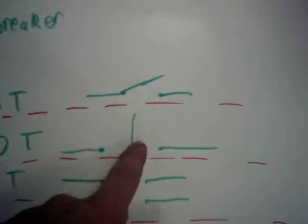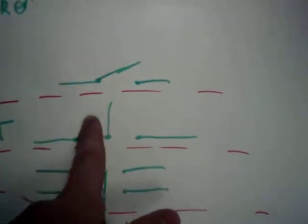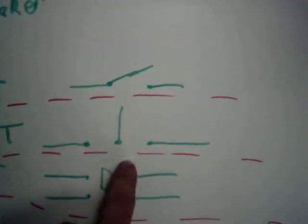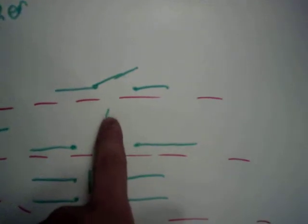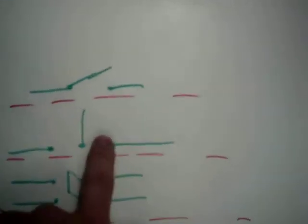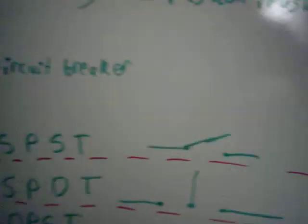Single pole double throw, see, there's one pole still, but there are two different settings you can set it to. So, you have the power comes through right here, but if you choose the middle setting, it won't go anywhere. If you choose over here, it'll go this way. If you choose to switch it that way, it'll go that way. So, that's a single pole double throw.